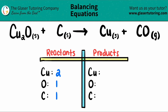Coming over to the product side, I don't see any subscripts. So I have one copper. For the carbon, I have one carbon. And then for the oxygen, I have one oxygen.